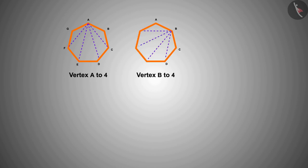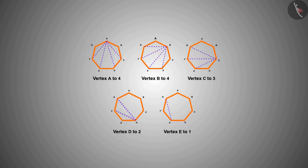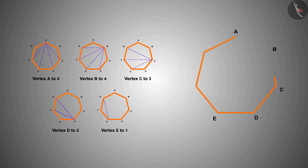Here you can see that from vertex A, 4 diagonals, from vertex B, 4, from vertex C, 3, from vertex D, 2, from vertex E, 1 diagonal is formed. So a heptagon can have a total of 14 diagonals.